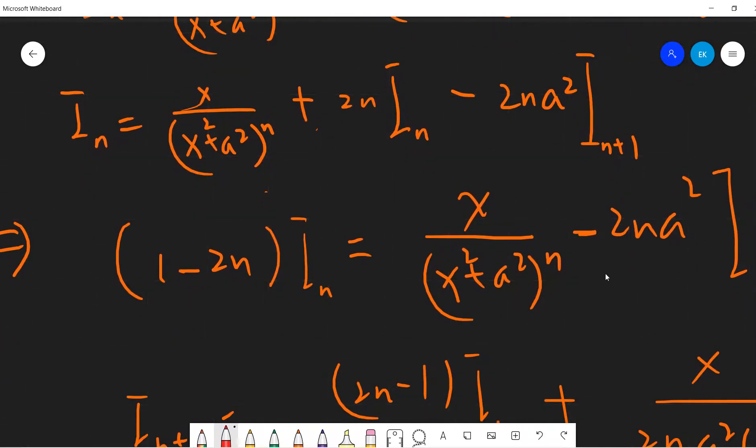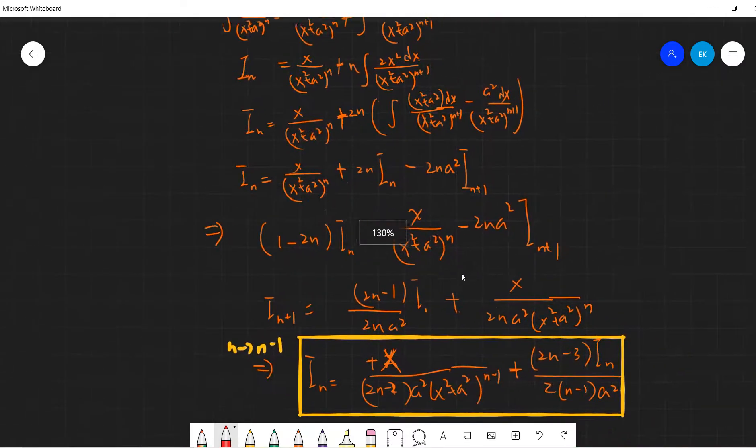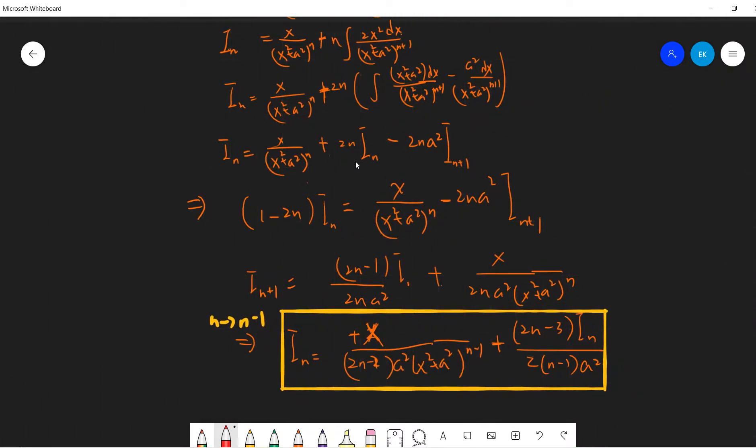So we get, we can shift it. I'll shift it as this. We change I_n to the left hand side. So 1 minus 2n times I_n equals x divided by x squared plus a squared to power n minus 2n a squared I_n plus 1. So we get I_n plus 1 equals to this, right? So this is just I_n plus 1 goes to the left hand side, this term goes to the right hand side, and divide it by 2n a squared.